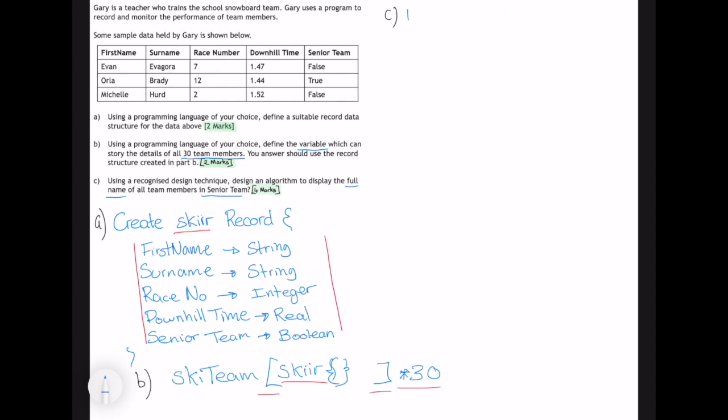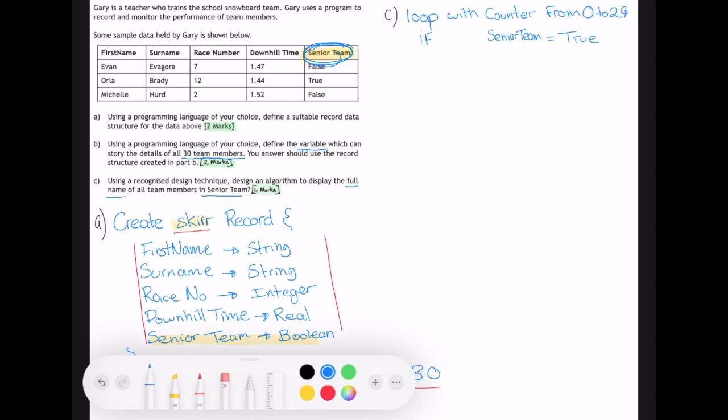We are going to loop with counter from 0 to 29 because that will give us 30 values. We're then going to look for our if something is equal to true. The value that we want to be true is that senior team value. And that senior team value is within our skier record, which is within our ski team array. So we're specifying that we're going to the ski team array, to the one with the counter, and it's the senior team that we want to be true.